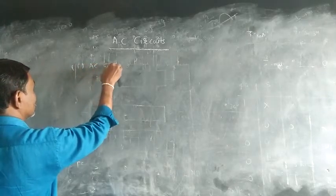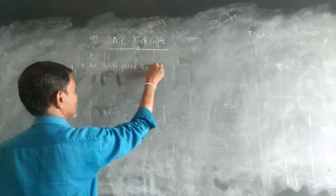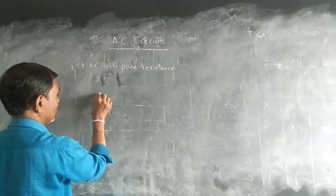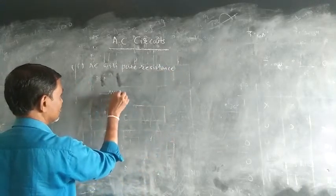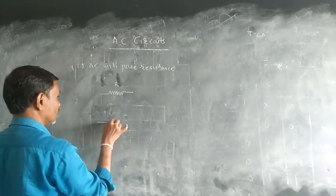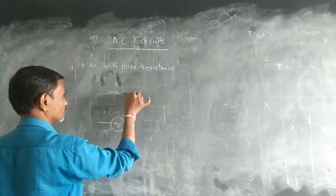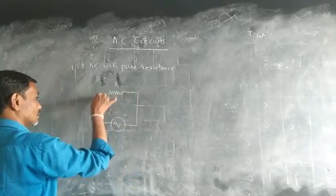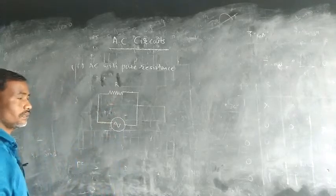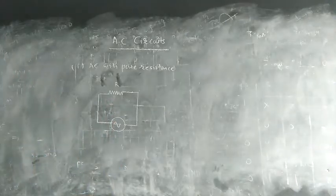AC with pure resistance. We have to discuss the AC circuits — AC with pure resistance. We will discuss one resistor connected across an alternating voltage source. This is a resistive AC circuit with an AC voltage source.